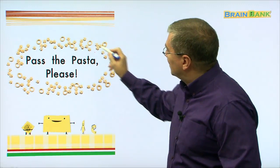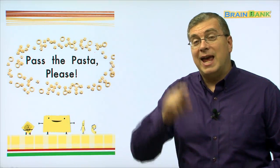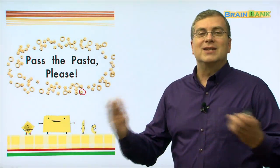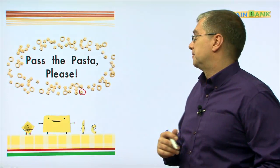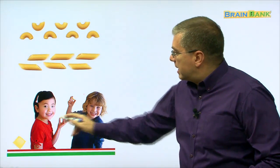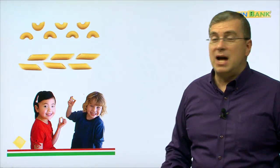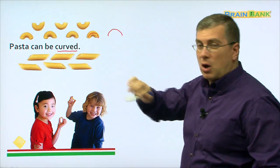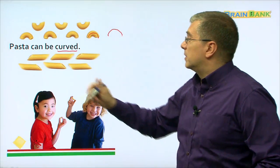There are more shapes for pasta. Look at all these shapes. Some pasta looks like a circle. Some pasta looks like a star. Some pasta is big, some pasta is small. Here we can see two different kinds of pasta. Our friends are holding different types of pasta. Pasta can be curved — curved like part of a circle.